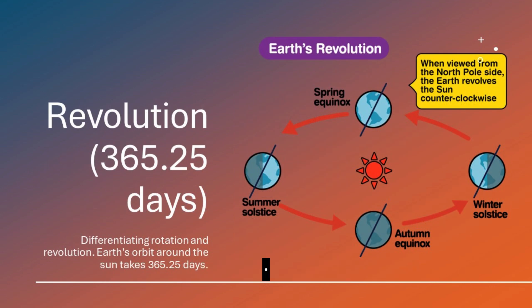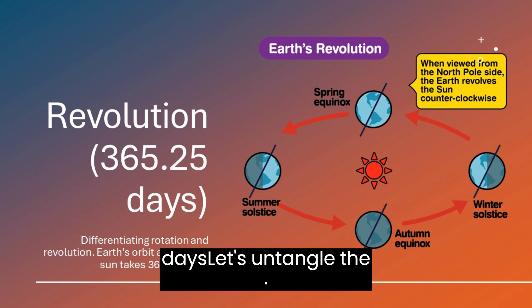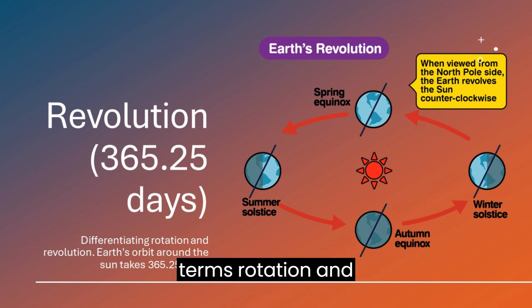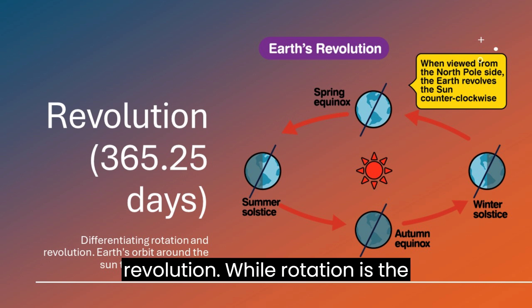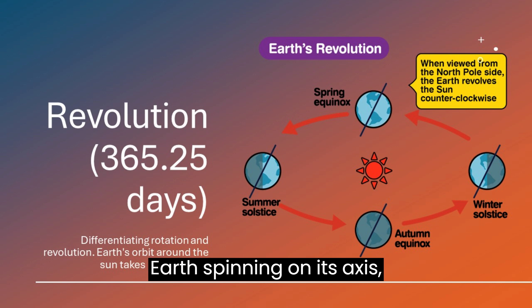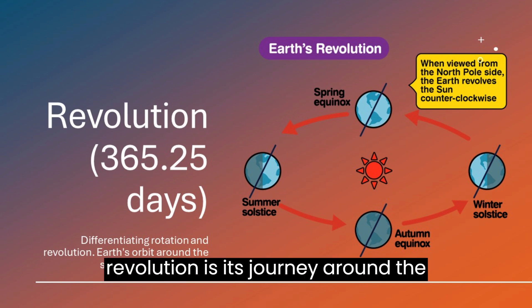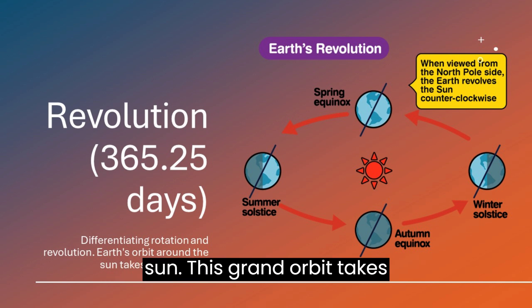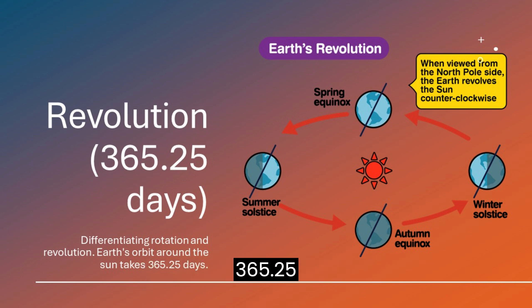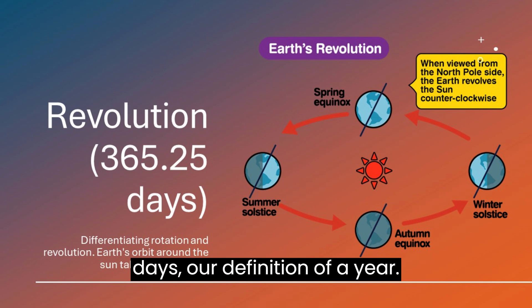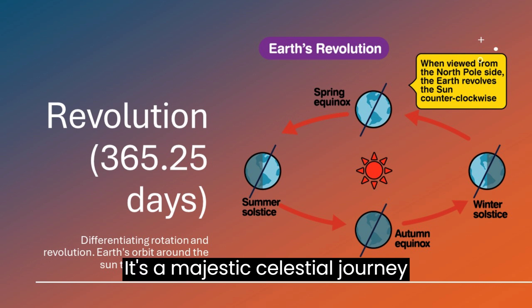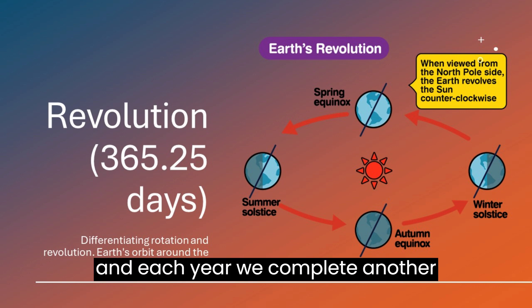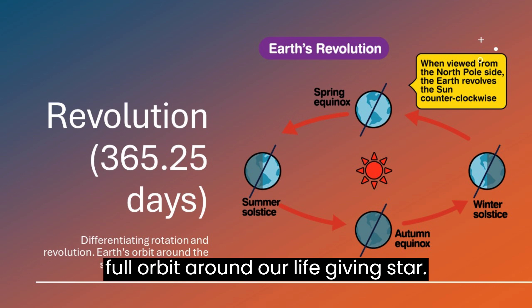Let's untangle the terms rotation and revolution. While rotation is Earth spinning on its axis, revolution is its journey around the sun. This grand orbit takes about 365.25 days — our definition of a year. It's a majestic celestial journey, and each year we complete another full orbit around our life-giving star.